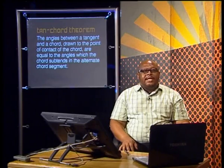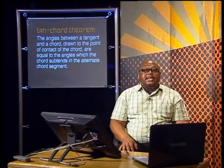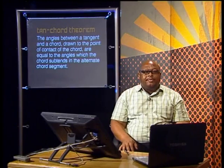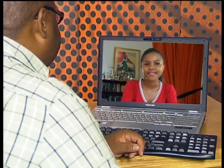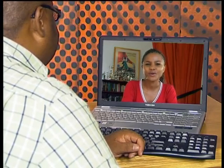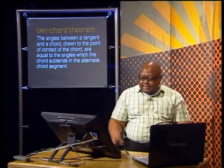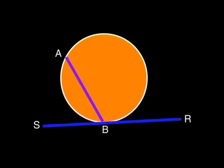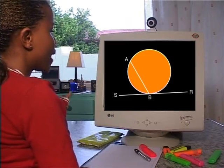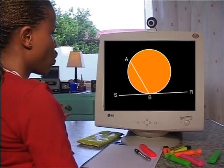Before we start proving this theorem, we need to be clear about the terminology used in this theorem statement so that we can understand what the theorem is trying to prove. Is there anything you are not clear on, Kanya? What do they mean by the angle between a tangent and a chord? I'll use a diagram to illustrate. Here is a diagram with a tangent RS and a chord AB. Now can you identify the angle between the tangent and the chord? Angle ABS lies between the tangent and the chord.